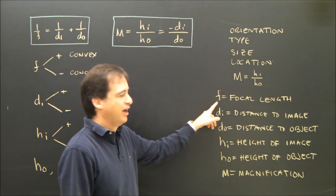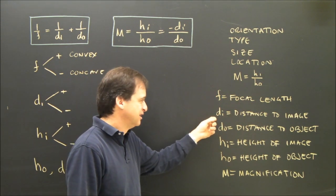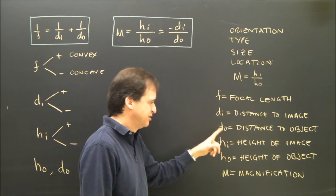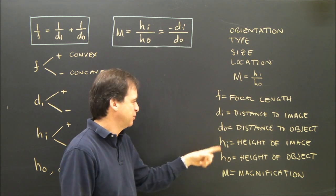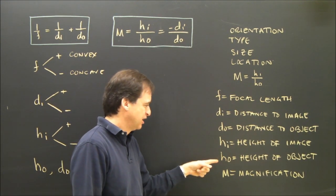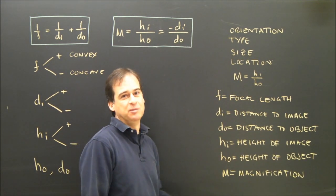So these are our variables. F is the focal length, DI is the distance to the image, DO is the distance to the object, HI is height of the image, HO is height of the object, and M is magnification.